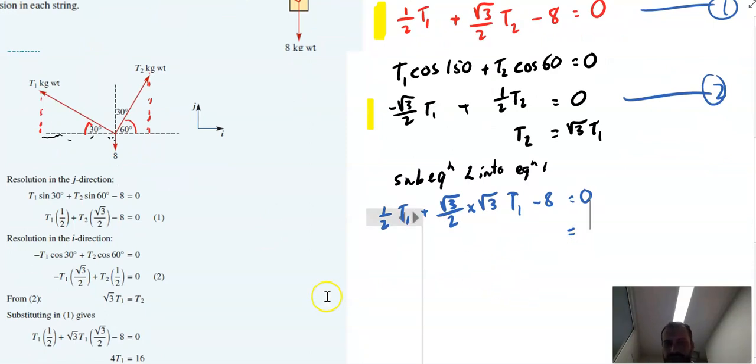And then you just do some algebraic stuff. So you've got half T1, root three times root three is three, so you have three on two T1 minus eight equals zero. Half T1 plus three on two, that's two T1 minus eight equals zero, which means that T1 will equal, the eight will come over there, divided by two, T1 will equal four.